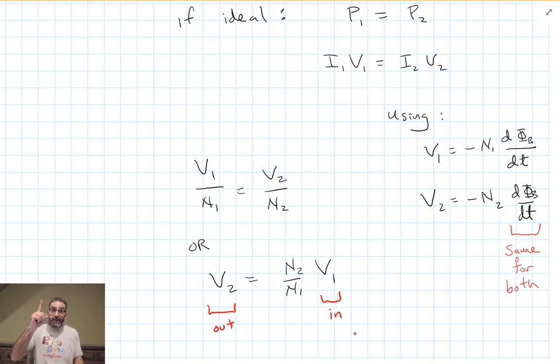So if there are more turns on the secondary coil, we get out a bigger voltage than we put in. And if there are fewer turns on the secondary coil, it's called a step down transformer. If we're getting out a smaller voltage than we're putting in because the turns ratio is such that N1 is greater than N2.